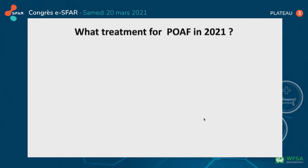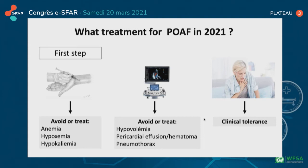Despite prevention, post-operative atrial fibrillation can occur, so we should discuss treatments. The first step for physicians is to simultaneously perform arterial blood gases to avoid or treat anemia, hypoxemia, and hypokalemia; to perform pleural and cardiac echocardiography to avoid or treat hypovolemia, pericardial effusion, or pneumothorax; and to assess the clinical tolerance of the atrial fibrillation.